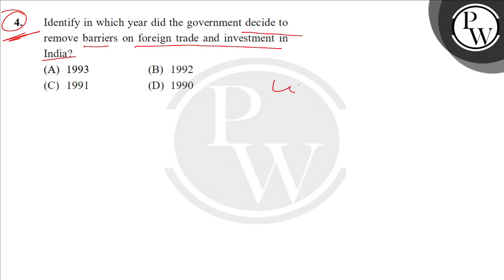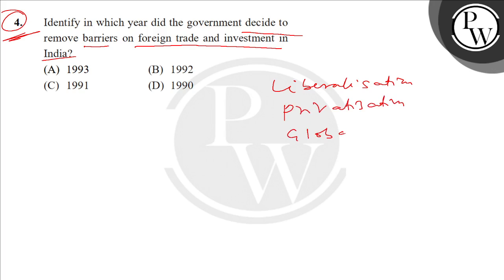In India, there was liberalization of trade, privatization, and globalization of trade. The answer is 1991 — this is what we call the LPG era reform.